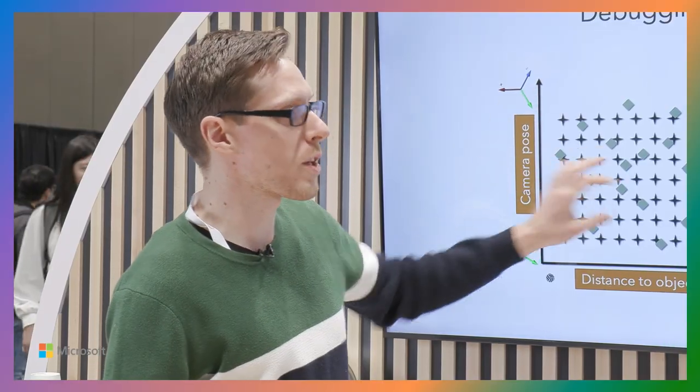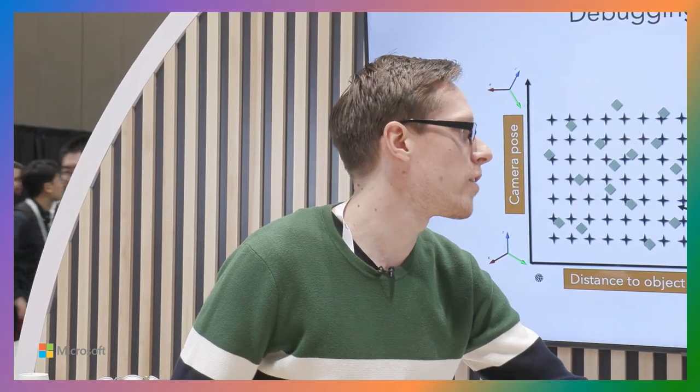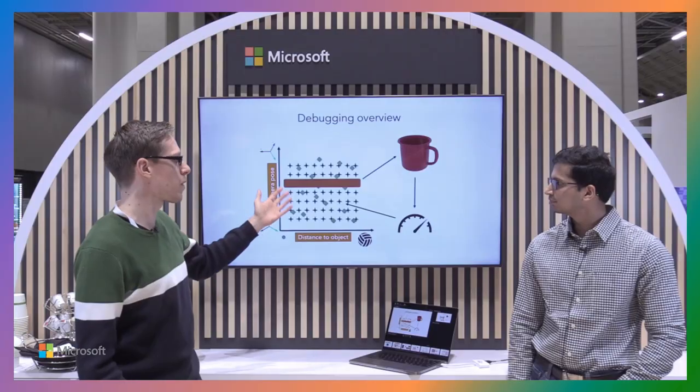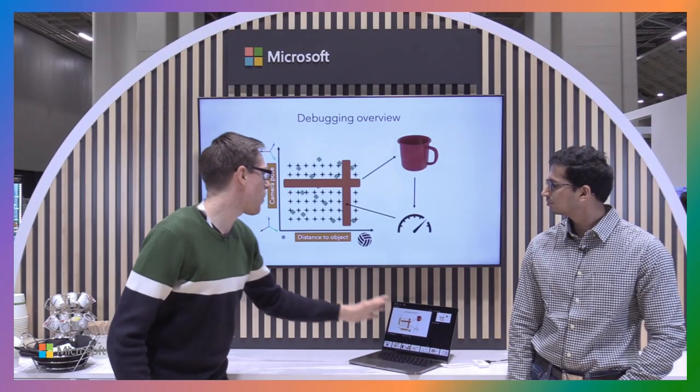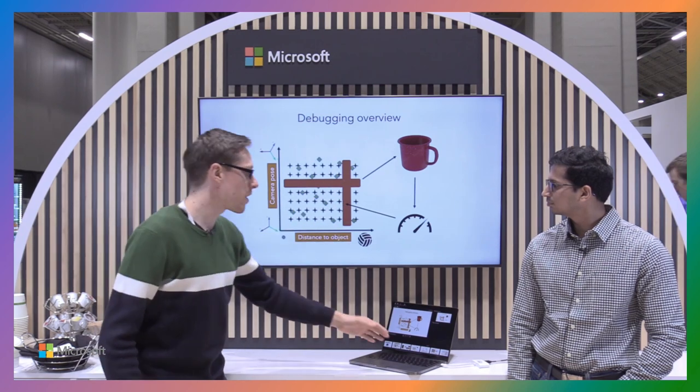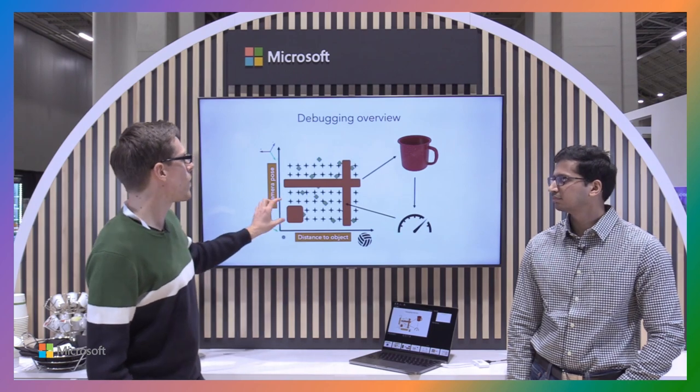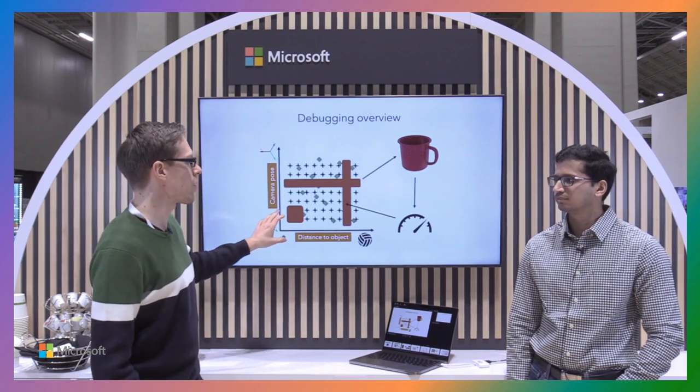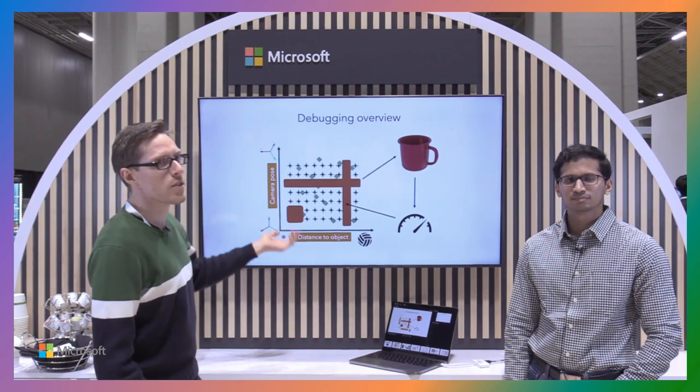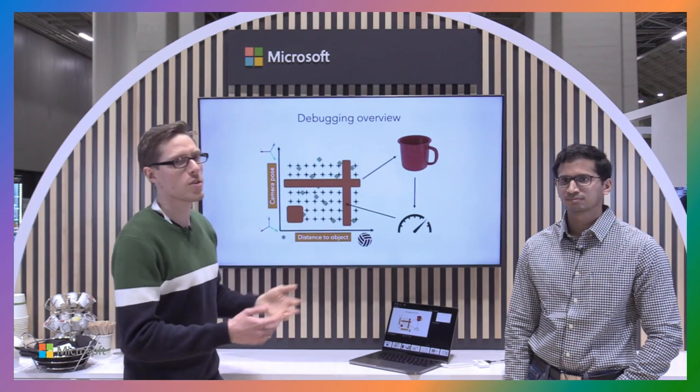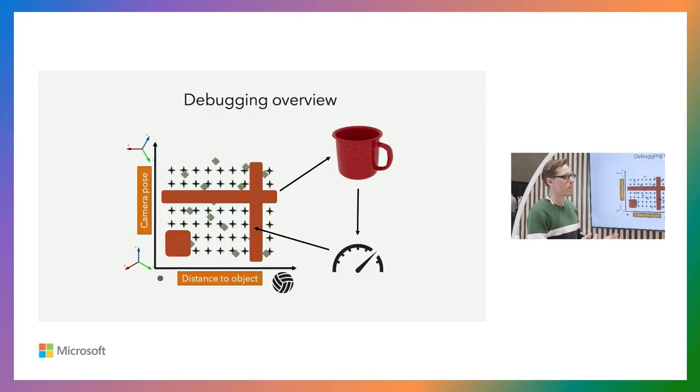Each point of this space actually corresponds to a unique image that we can render using 3DB and then pass it to the model and evaluate the performance. That's very useful because now we know the performance of the model not only on this image, but we know what it corresponds to originally before the image was rendered. This helps us identify problems related to camera pose or distance, or even better, only when the problems occur in a combination of those two things.